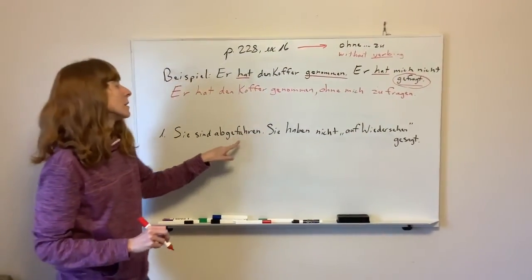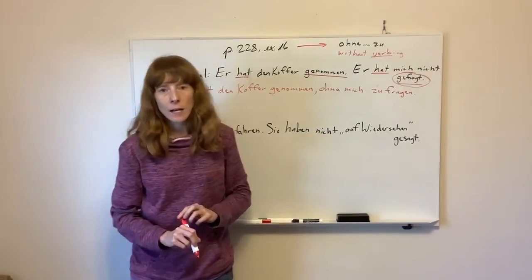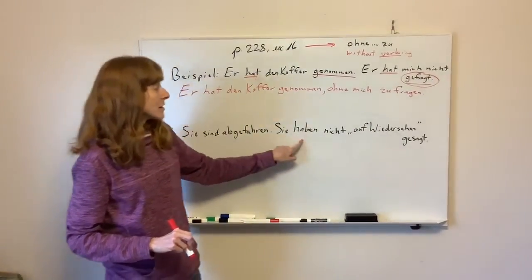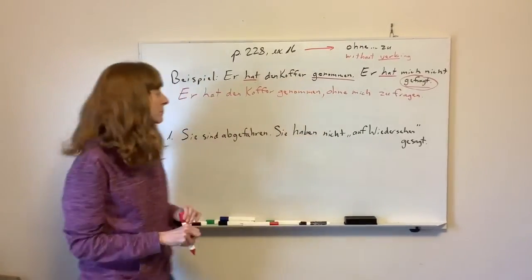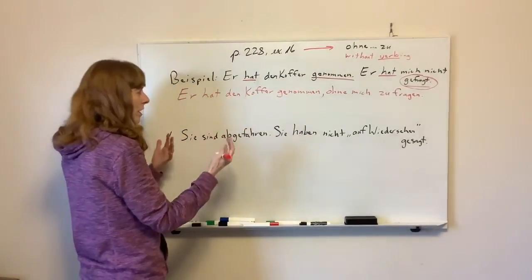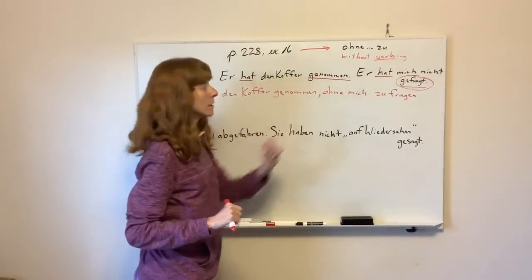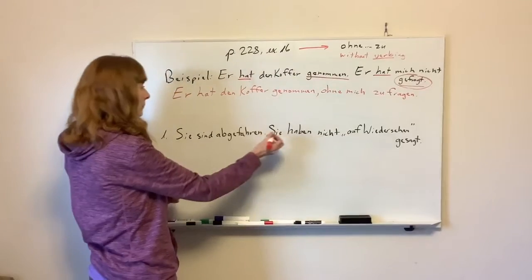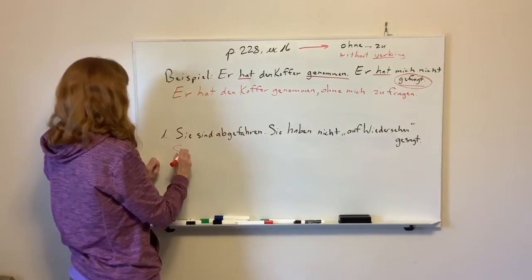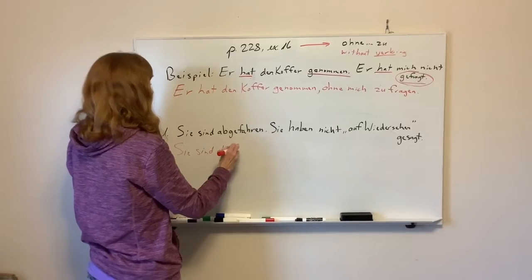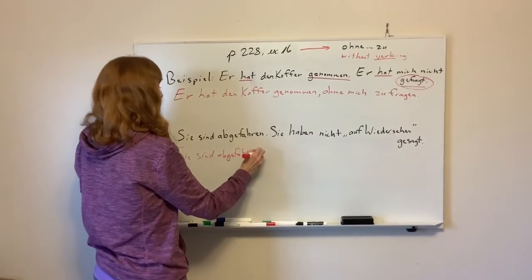Sie sind abgefahren. Sie haben nicht auf Wiedersehen gesagt. They drove away. They didn't say goodbye. So we're going to try to change this second part over here to something like, without saying goodbye. Okay, so the first part will be the same. Sie sind abgefahren. Komma.